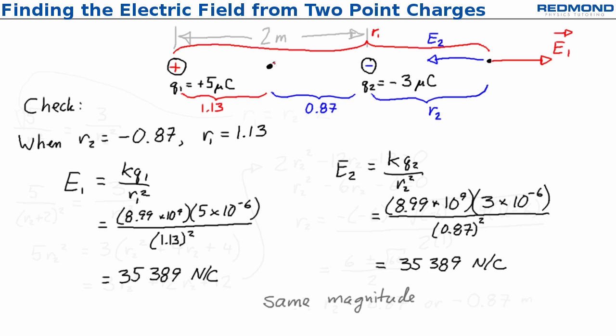I need to use my understanding of physics, though, that in this region, E1 and E2 are in the same direction and cannot cancel each other out to realize that this is not a valid solution to the problem.